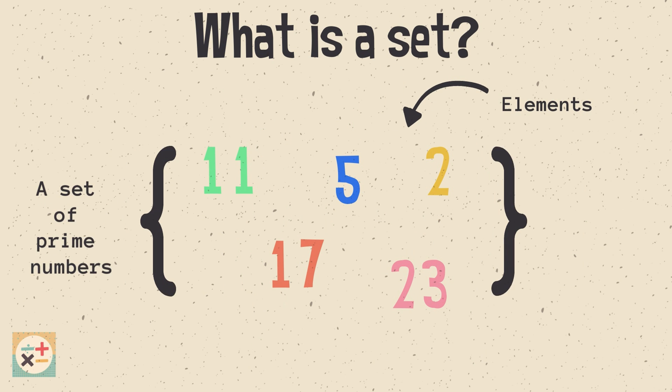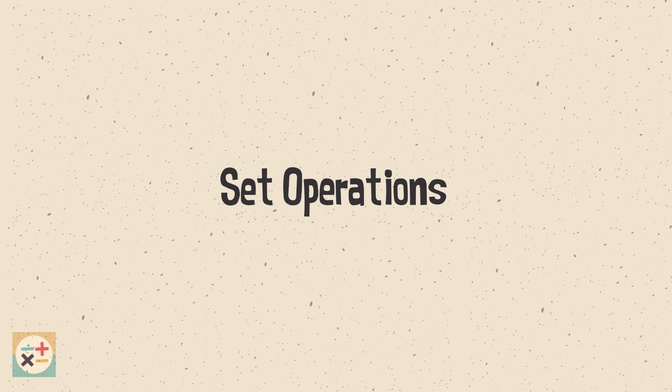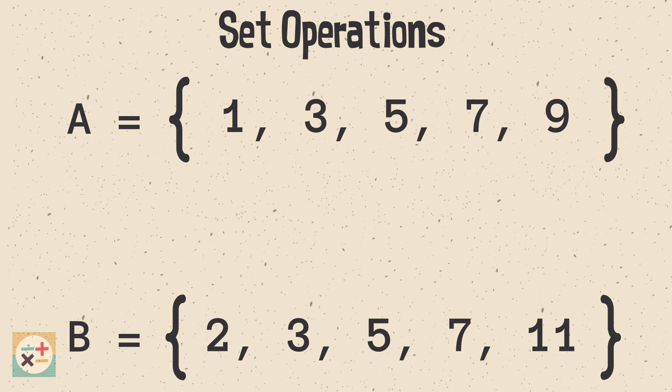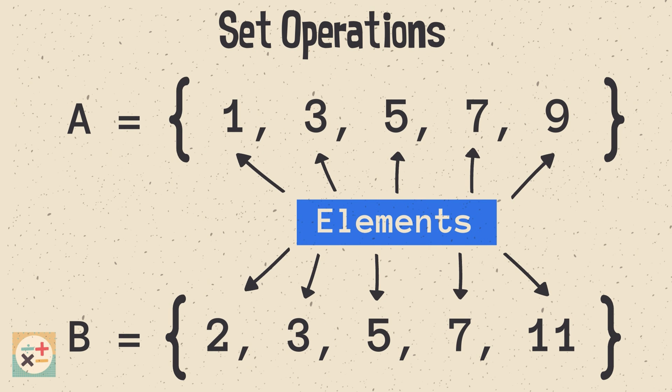We use set notation to represent these collections in a clear and concise way. A set is usually denoted by a capital letter, such as A or B, and the elements within the set are enclosed in curly braces and separated with commas. The elements do not have to be in any specific order.